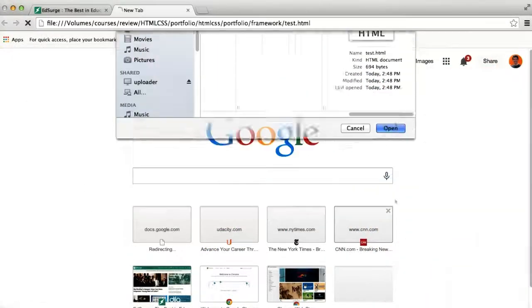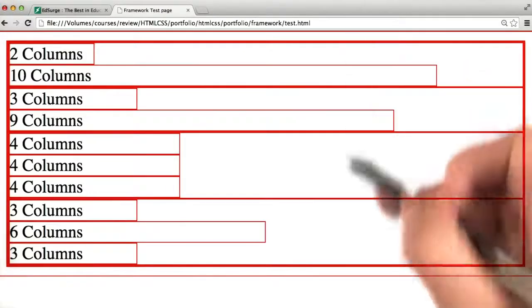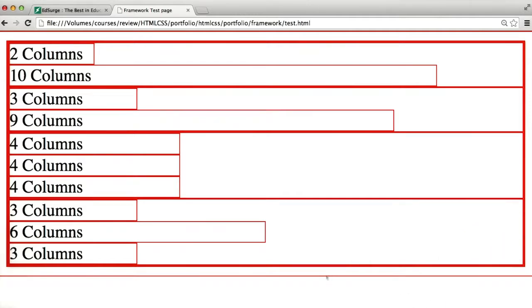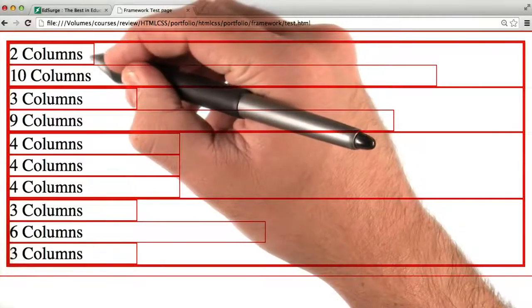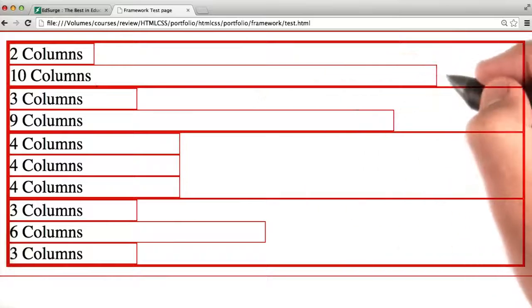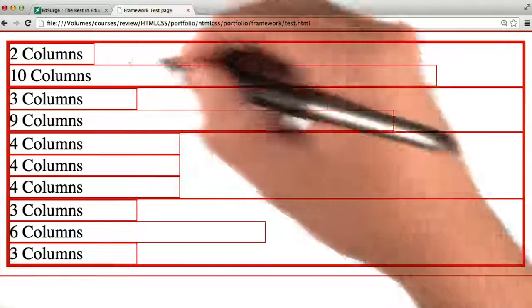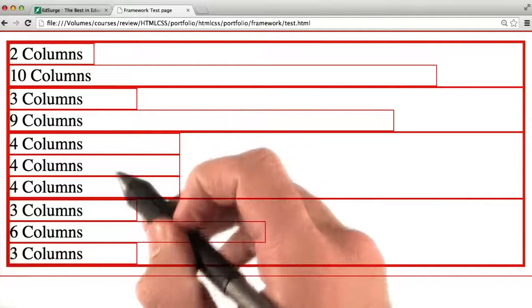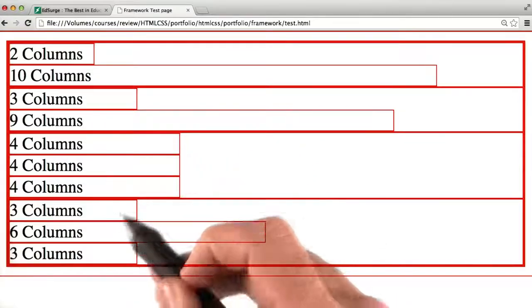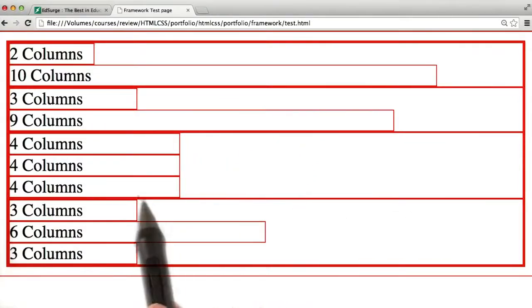Opening test.html in the browser, and we see this. Something doesn't look right. So we can see column two and column 10, but it looks like they're stacked on top of each other. They're not lining up next to each other. Same thing for three and nine. Each one of these should just fill up one row, but instead the columns are stacked on top of each other.